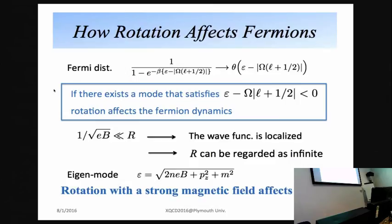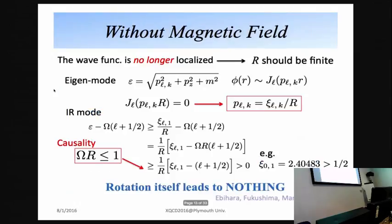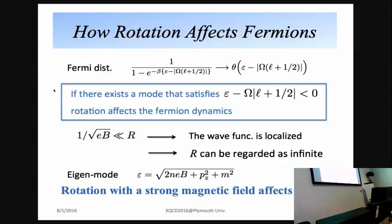We must mention that at finite angular velocity omega, it is introduced into the fermion dynamics through the Fermi distribution function. Therefore, at zero temperature, omega appears only in the step function, meaning rotation affects fermion dynamics only if there exists a mode satisfying the corresponding condition. Otherwise, rotation has no effect.